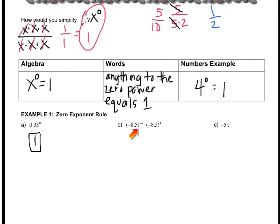In order to do this, I have to do the Mad Spam rules. When you have multiplication, you add the exponents. So that gives me negative 8.5 in parentheses, and negative 4 plus 4 is zero. So now you see that anything to the zero power is one.